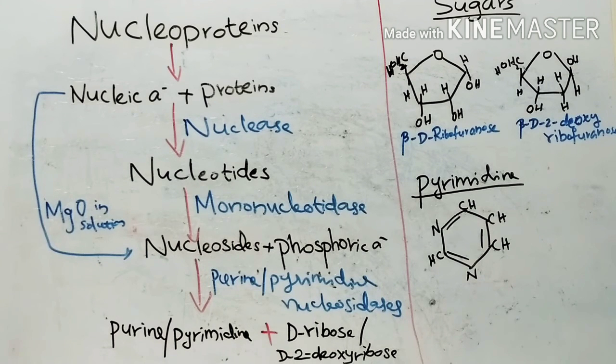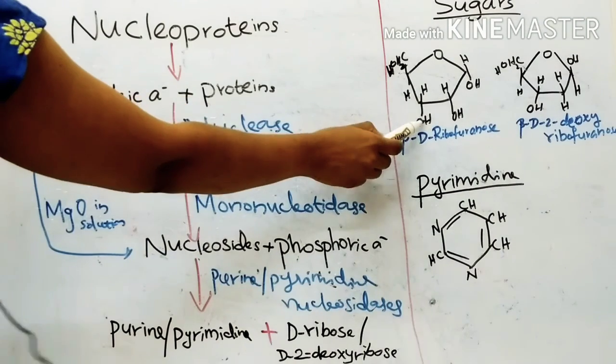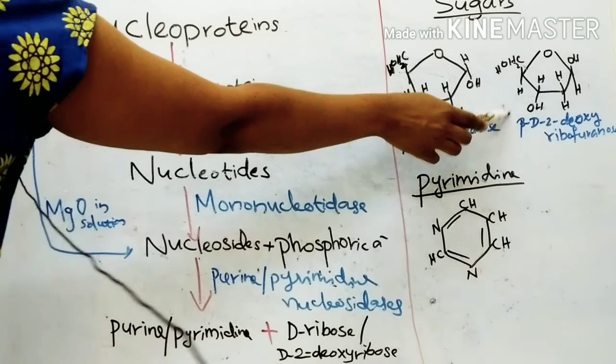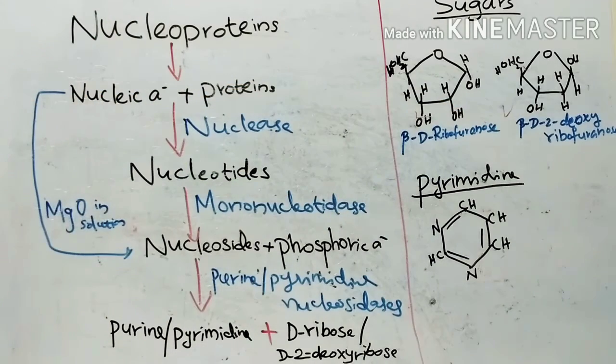Mainly, two types of sugars, D-ribose and D2-deoxyribose, are found in nucleic acids. Both sugars are present in nucleic acids as the beta-furanose ring structures. This is beta-D-ribose and beta-D2-deoxyribose.